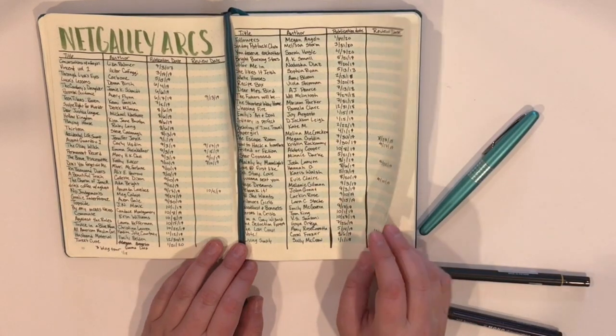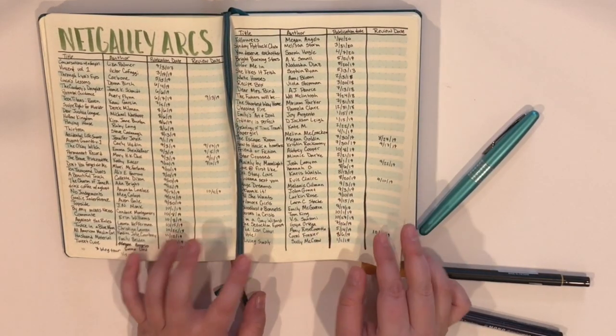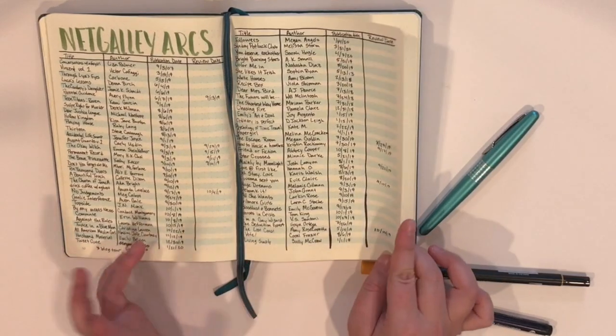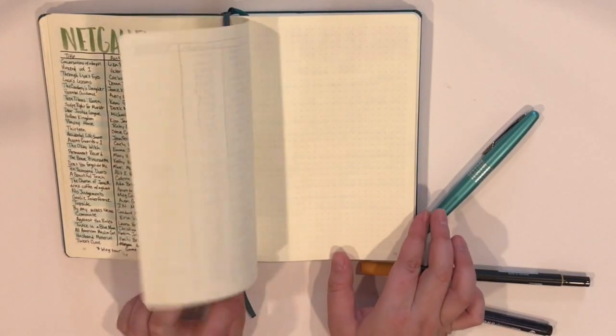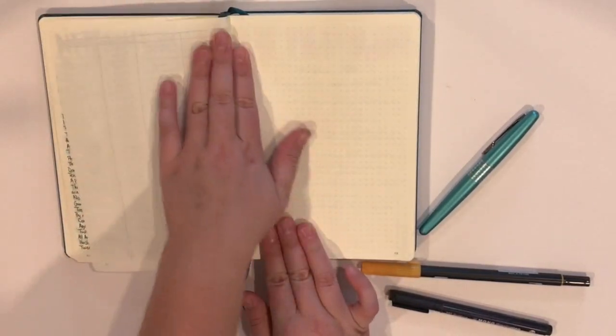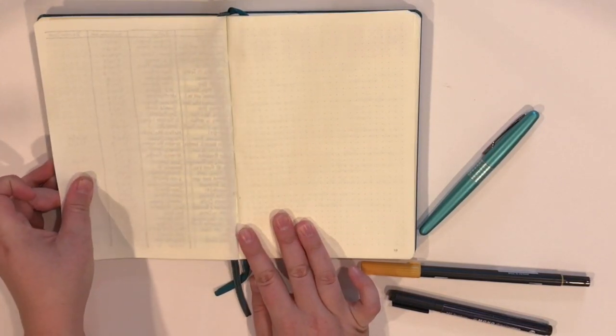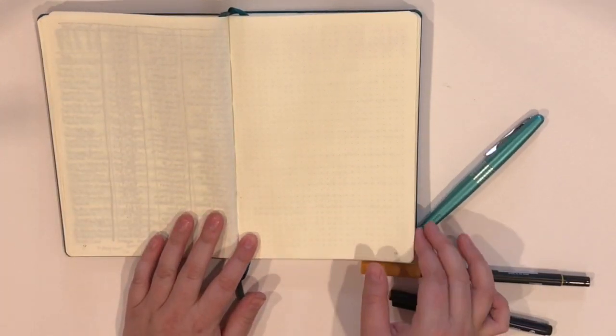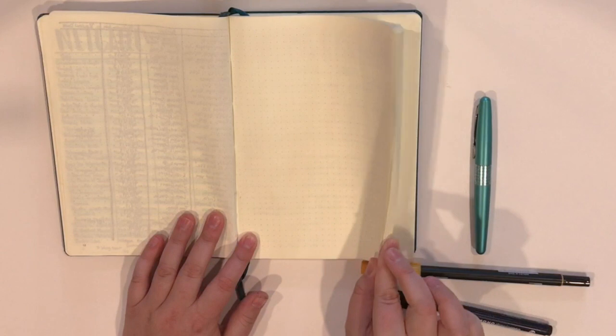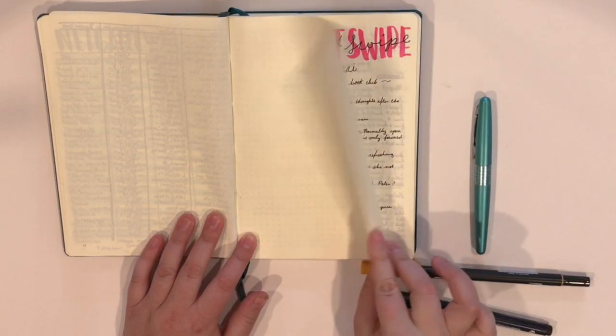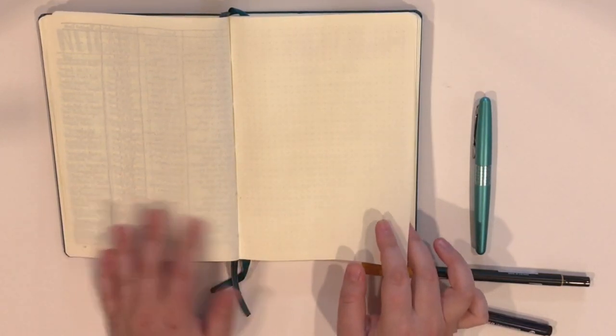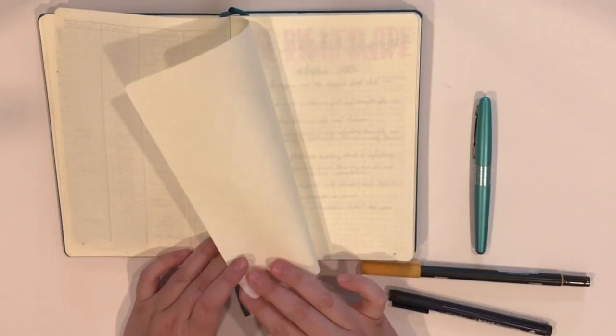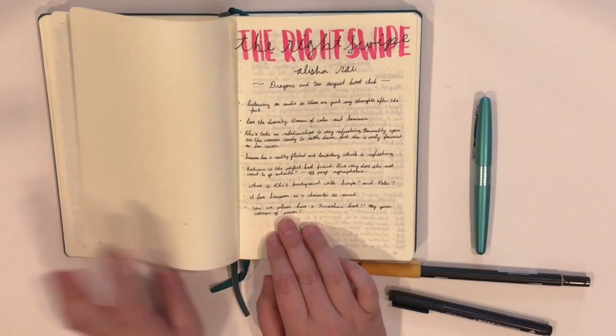I did leave a couple of pages blank in case I wanted to do any other collection pages, anything like that, before I moved on to my NetGalley arcs. Yes, I have a lot of these. I'm thinking, if you want, I will do a separate video on all of my NetGalley arcs. I left a separate page just because I know that this is going to last me quite a while.